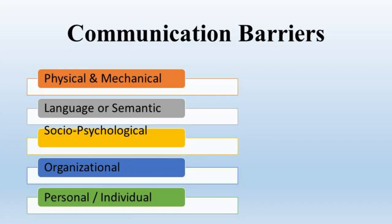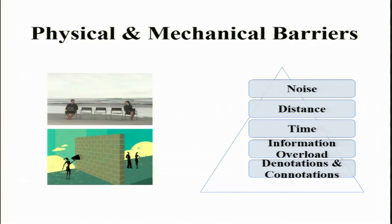Moving forward, I have categorized communication barriers into 5 major categories. To begin with, we have physical and mechanical barriers. The second category is language barriers arising out of language differences. The third category is socio-psychological barriers. The fourth is organizational barriers, and the fifth is personal or individual barriers. I will begin with physical or mechanical barriers.